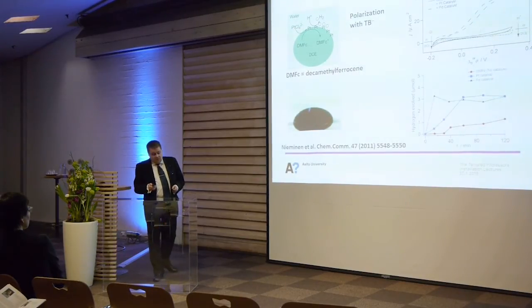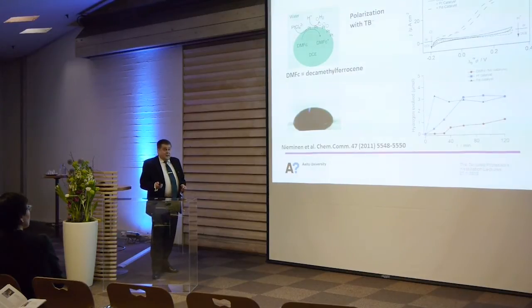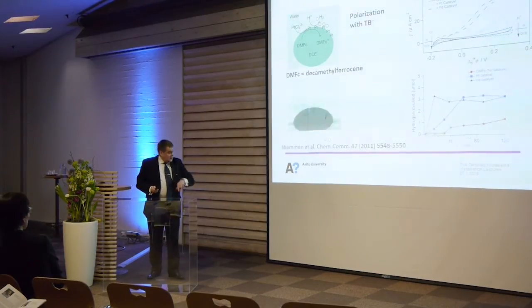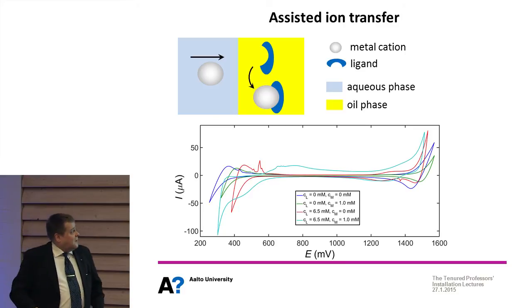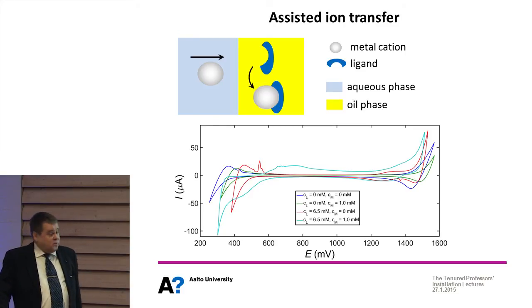We can do, in principle - this is very preliminary and kind of proof of concept experiment - but in principle we could use this in hydrogen economy in the future. My last example is something which just started to run in our lab. This measurement was done last week. Metallic cations are not capable of crossing this interface if they are not assisted. This process is used in hydrometallurgy. Of course, we have some organic ligand which is capable of selectively binding cations.